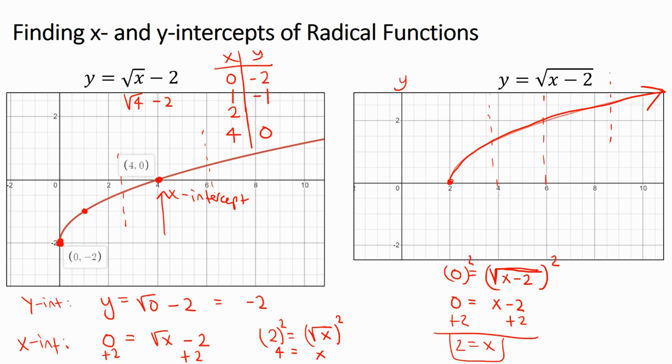So if I just plug in 0 for x, 0 minus 2, the way I know that there's no y-intercept is because 0 minus 2 is negative 2 and y can't be equal to the square root of negative 2. That number doesn't exist because there are no two numbers that multiply to get negative 2 that are the same number.